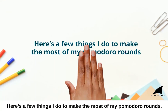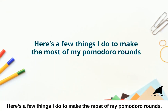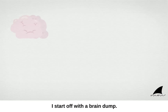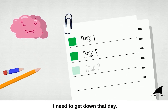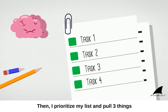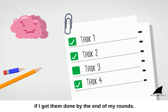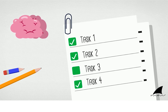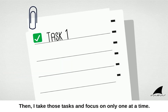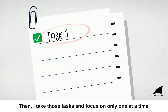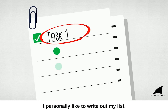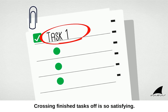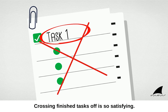Here are a few things I do to make the most of my Pomodoro rounds. I start off with a brain dump — I take a piece of paper and write out everything I need to get done that day. Then I prioritize my list and pull three things that would make me feel accomplished if I got them done by the end of my rounds. Then I take those tasks and focus on only one at a time. I personally like to write out my list — crossing finished tasks off is so satisfying.